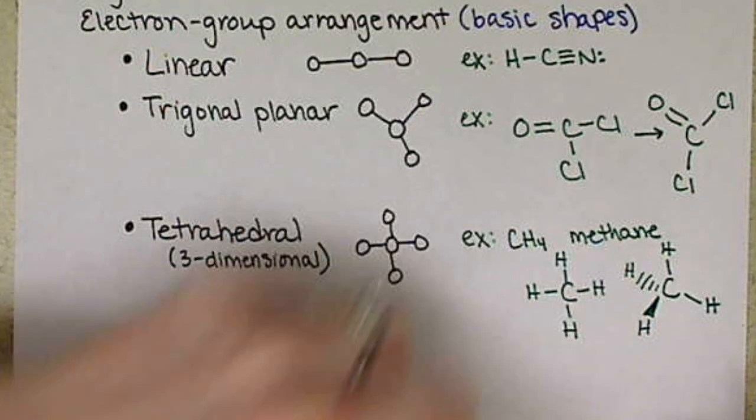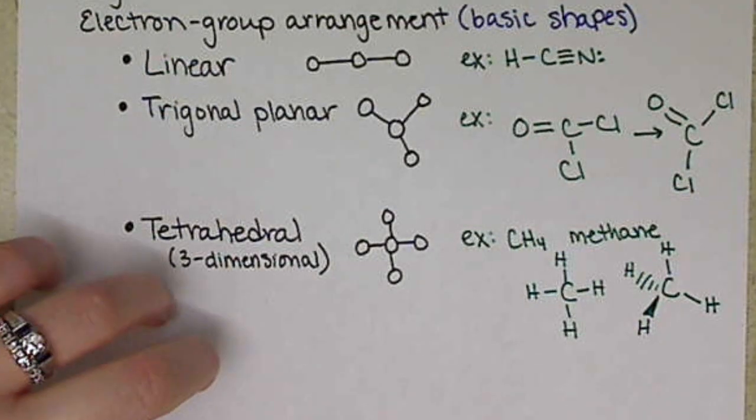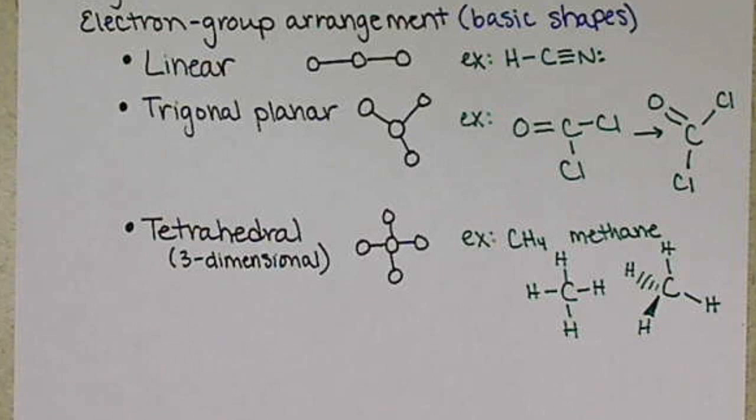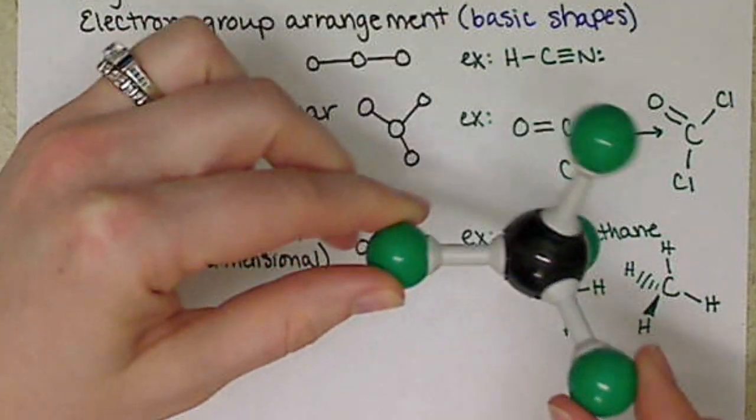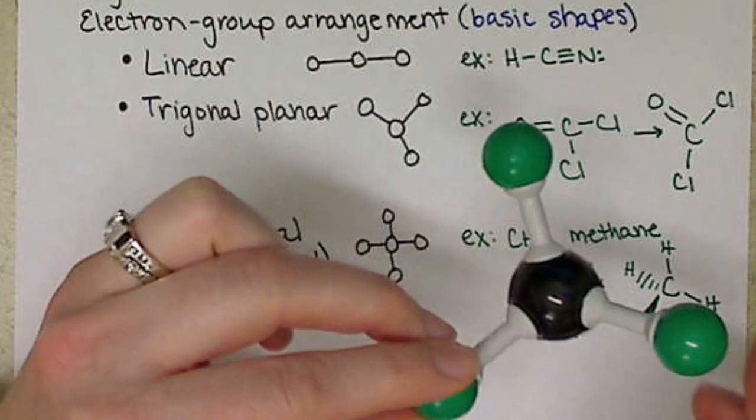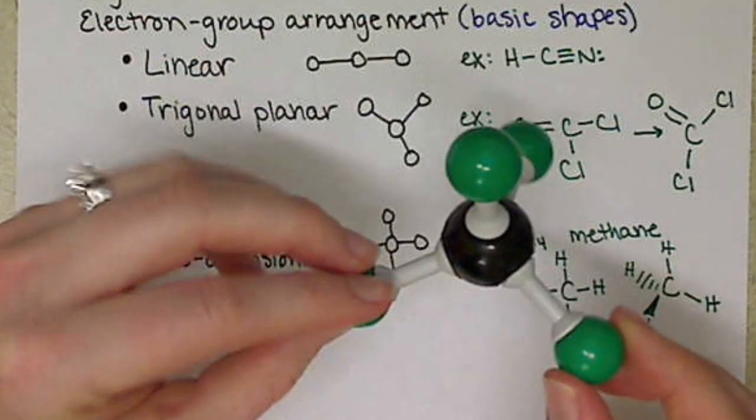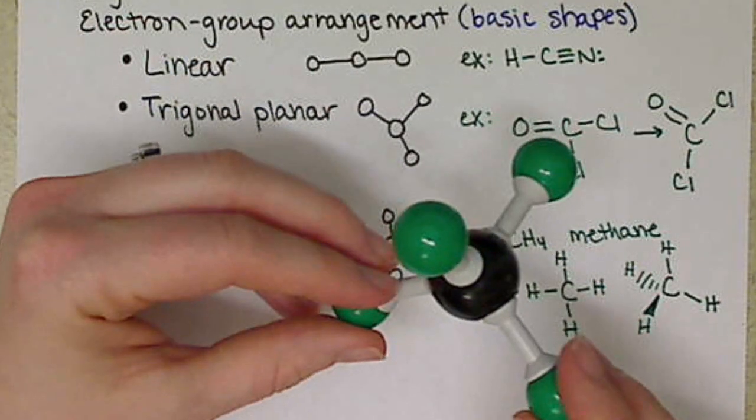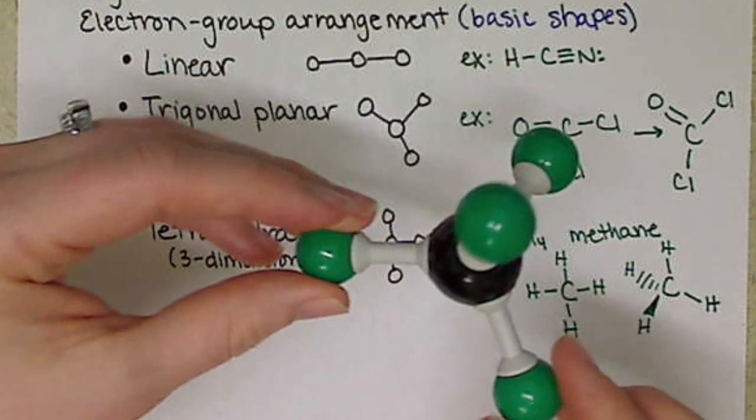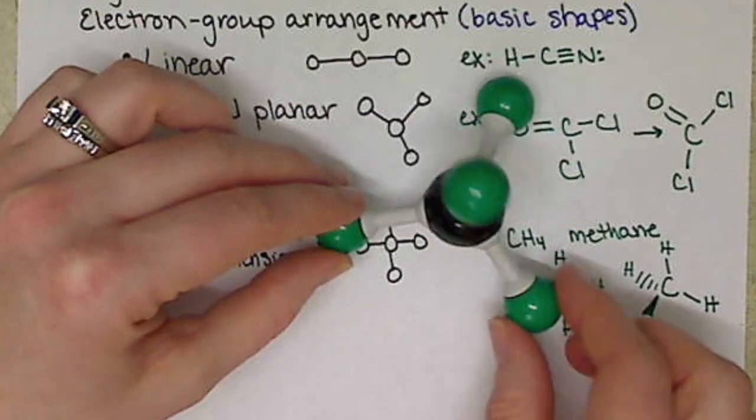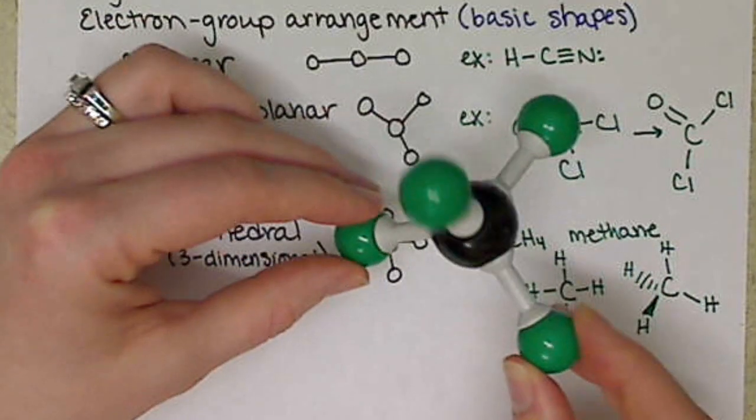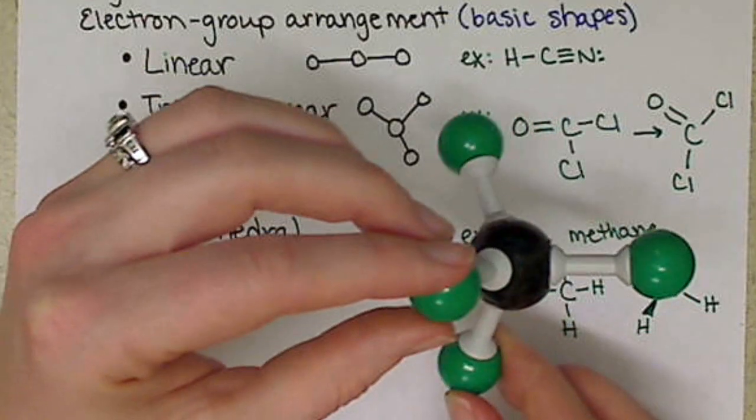And again, this is beyond what we need to know. I'm just showing it to you in case you see it. Here's a model, a build a kit of a molecule. This is the tetrahedral shape. I'll try and put some links on our Moodle site that shows the three dimensionality. But notice this has some three dimensionality to it. It's not just a cross.